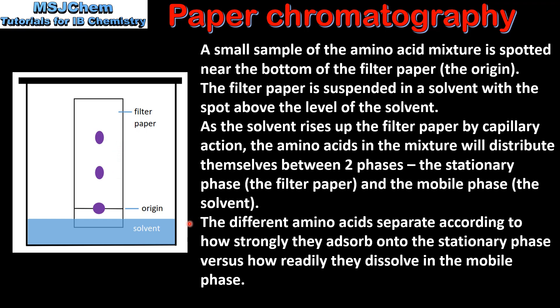The different amino acids separate according to how strongly they absorb onto the stationary phase versus how readily they dissolve in the mobile phase. The amino acid which absorbs more strongly to the stationary phase won't travel as far up the paper, and the amino acid which is more soluble in the mobile phase will travel further up the paper.